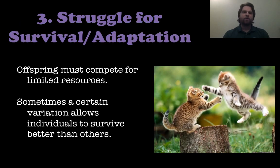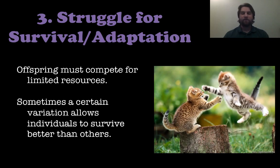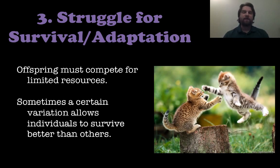Next is struggle for survival, or adaptation. Offspring have to compete for limited resources within the same population. Sometimes one offspring will have a certain variation that allows it to survive just a little bit better than its siblings. That offspring is more likely to survive because of that adaptation, and therefore will pass that trait along to the next generation because it survives long enough to reproduce.